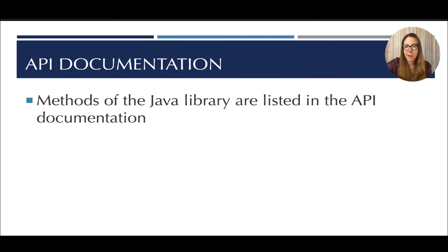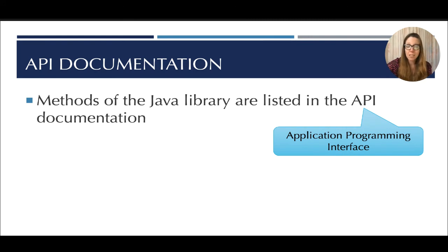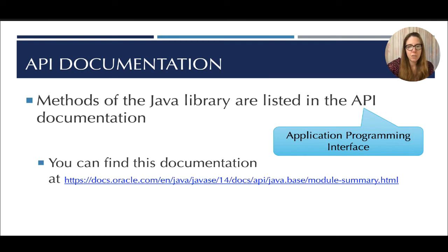Methods of the Java library are listed in the API documentation. And API stands for Application Programming Interface. So this is something you can go explore and see what's available to you. As I mentioned, the Java library would take forever to learn. But when you decide that you need something, you can go look it up. And the way that you do that is you can go to this incredible link at the bottom. You can also type Oracle and Java docs search and you will find it.